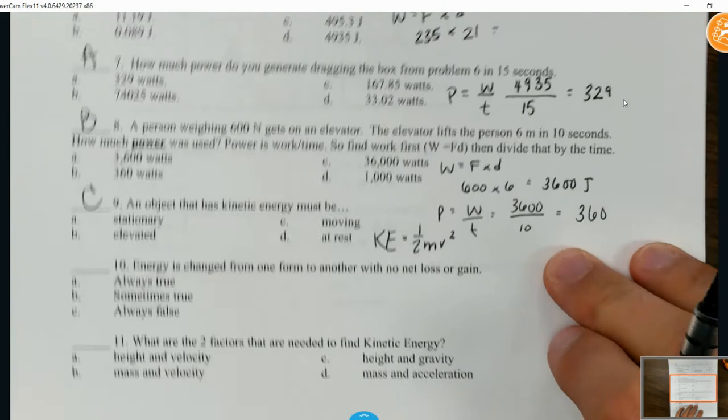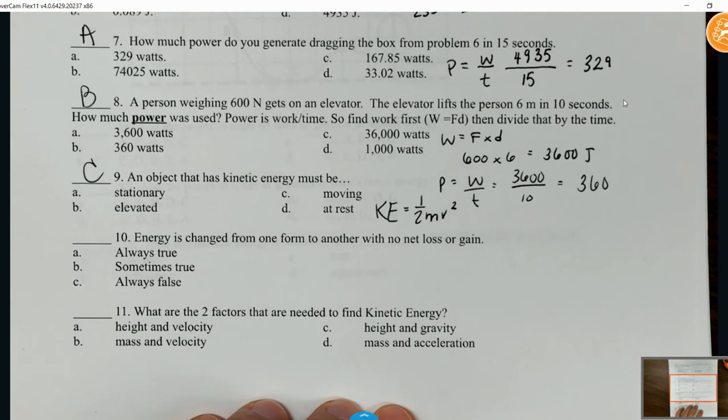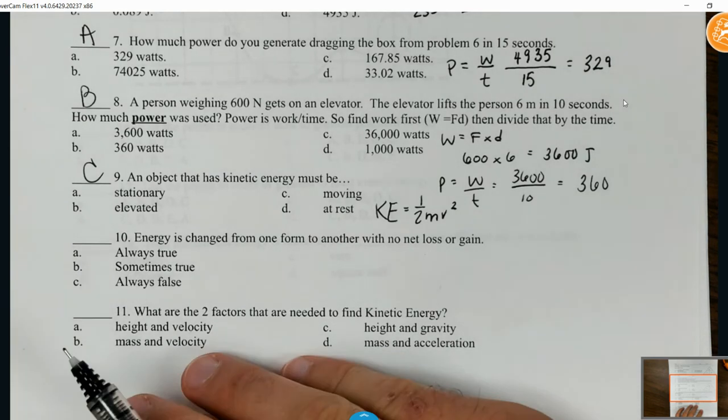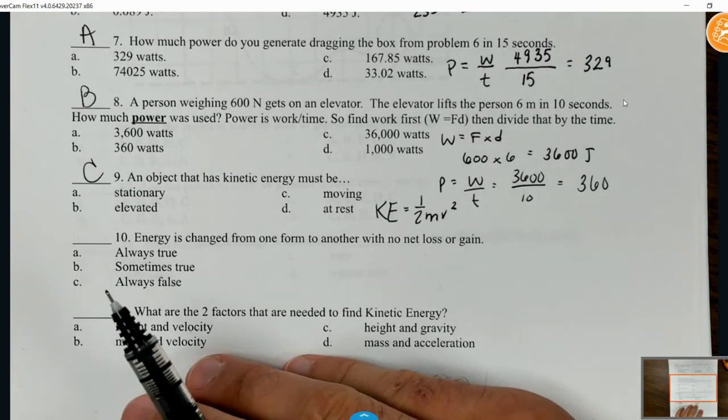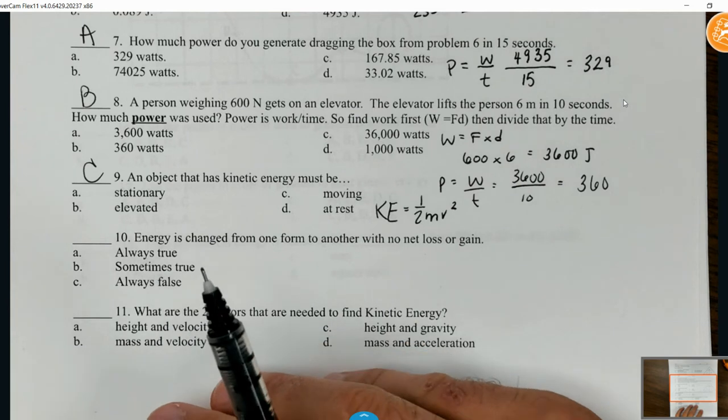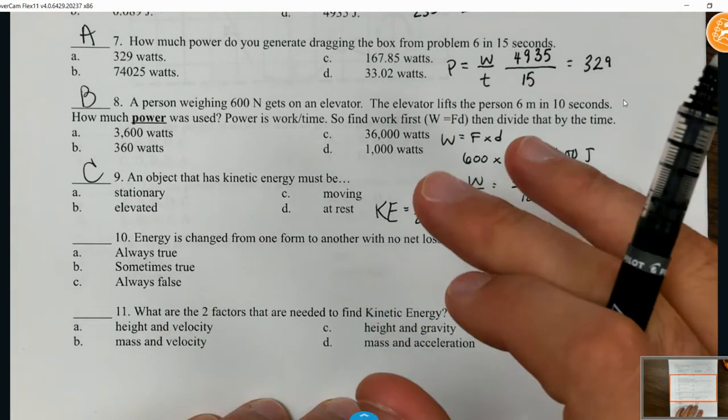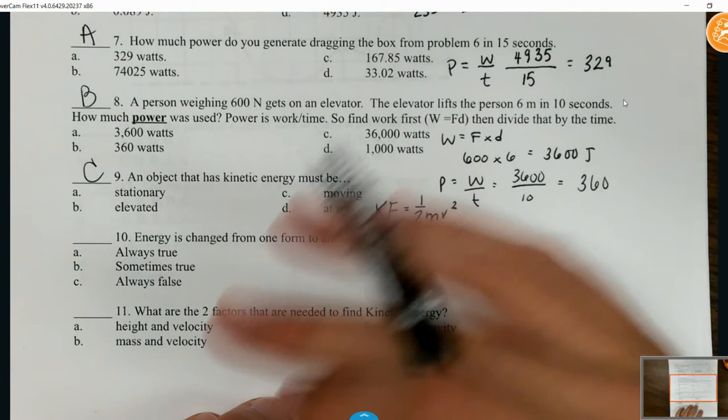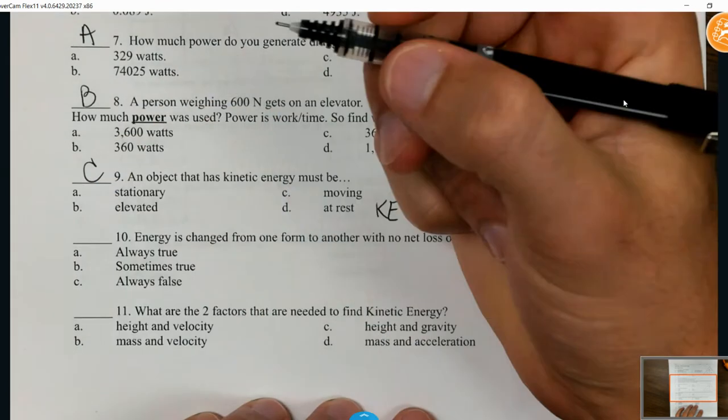Energy is changed from one form to another with no net loss or gain - sometimes true, always true, never true? The conservation of energy law basically states energy cannot be created nor destroyed, it can only be transferred from one form to another. Even if the kinetic energy before may be different after, energy doesn't disappear. It's always going to transfer, so yes, always true.